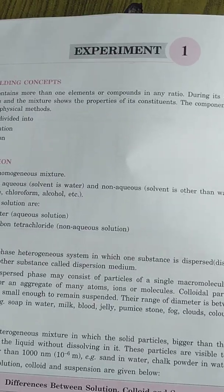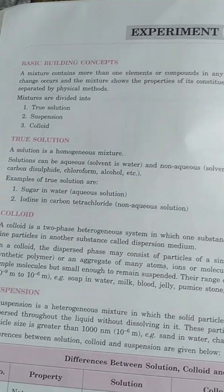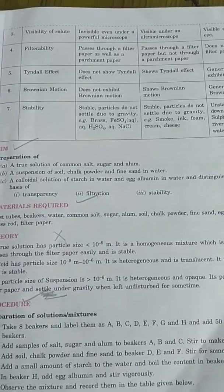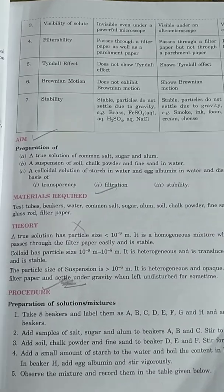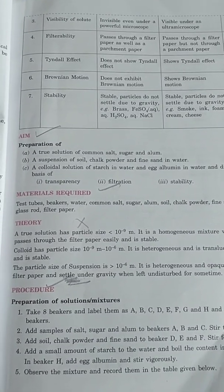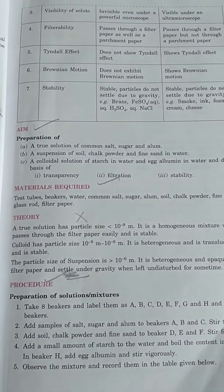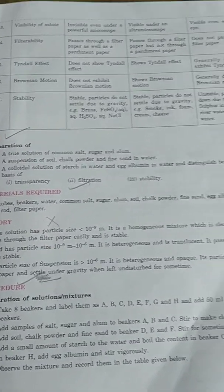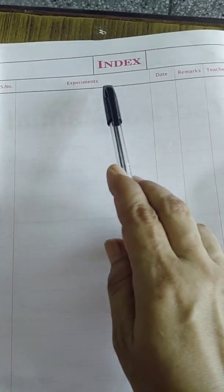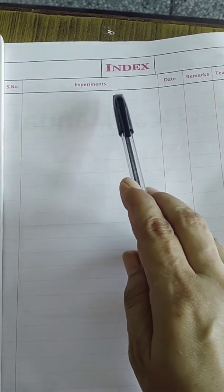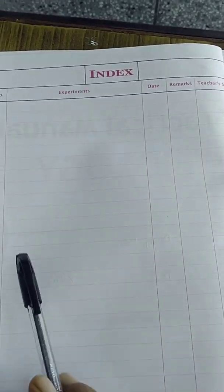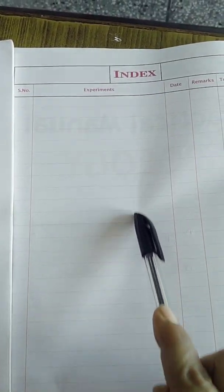Now the first practical is of chemistry: to prepare true solution, colloidal solution, and suspension. Please listen carefully as you watch this video and keep writing the main points, so there is no need to repeatedly watch the video when writing your practicals. This is the index part of your practical file — it has serial number and experiment name. If you are using a combined practical file, write the aim of the experiment with the subject name in brackets, such as chemistry, bio, or physics.